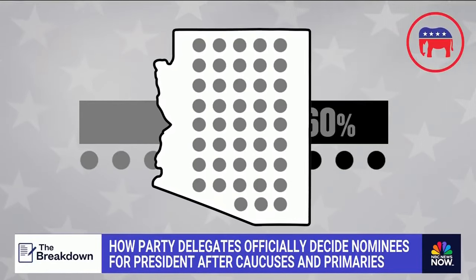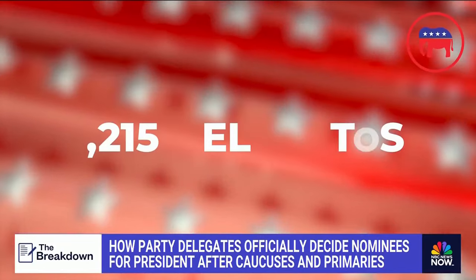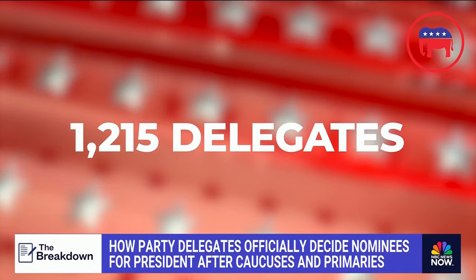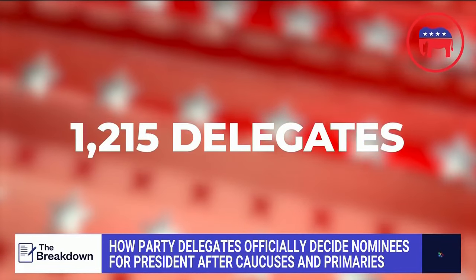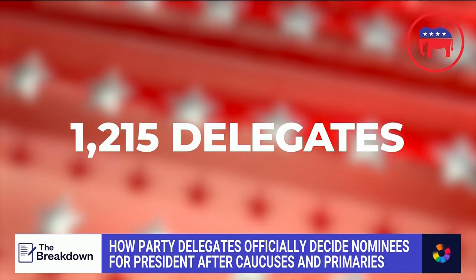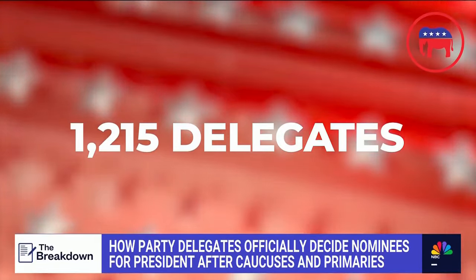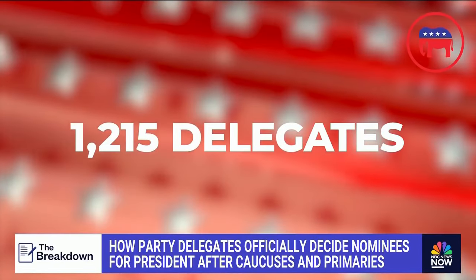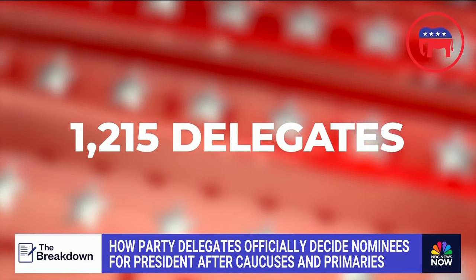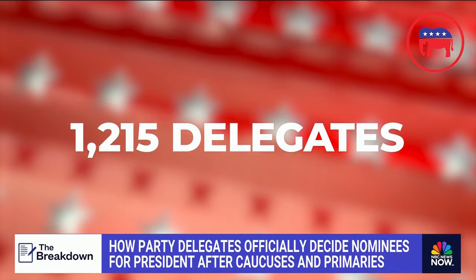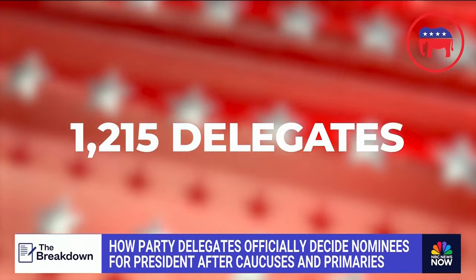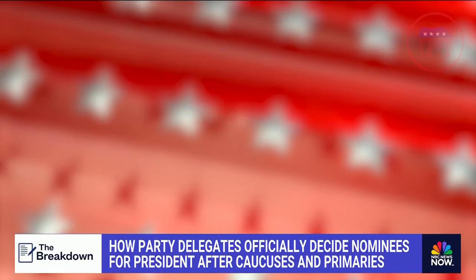Some states use a mix. The magic number is 1,215 delegates for Republican candidates to secure the nomination. If they don't lock in the majority of delegates ahead of time, it'll come down to the convention.